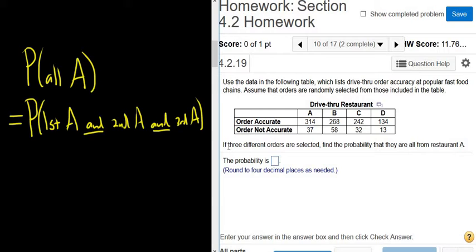And so we have two or more things, in this case three, and we have the keyword of and. That means we multiply, right? We're going to use the multiplication rule. Okay, so we want the first one to be from restaurant A.